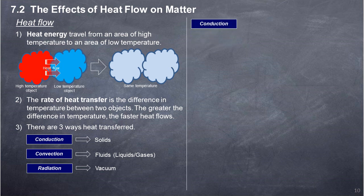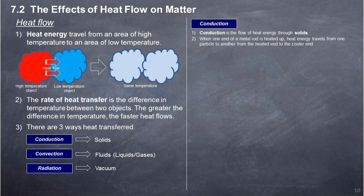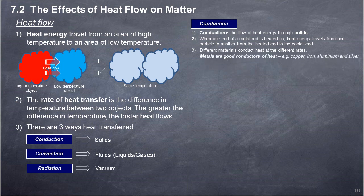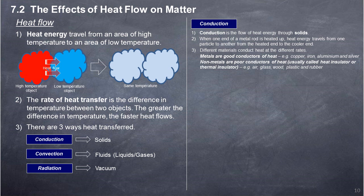Conduction is the flow of heat energy through solids. When one end of a metal rod is heated, heat energy travels from one particle to another, from the heated end to the cooler end. Different materials conduct heat at different rates. Metals are good conductors of heat, for example copper, iron, aluminium, and silver. Non-metals are poor conductors of heat, usually called heat insulators or thermal insulators, for example air, glass, wood, plastic, and rubber.